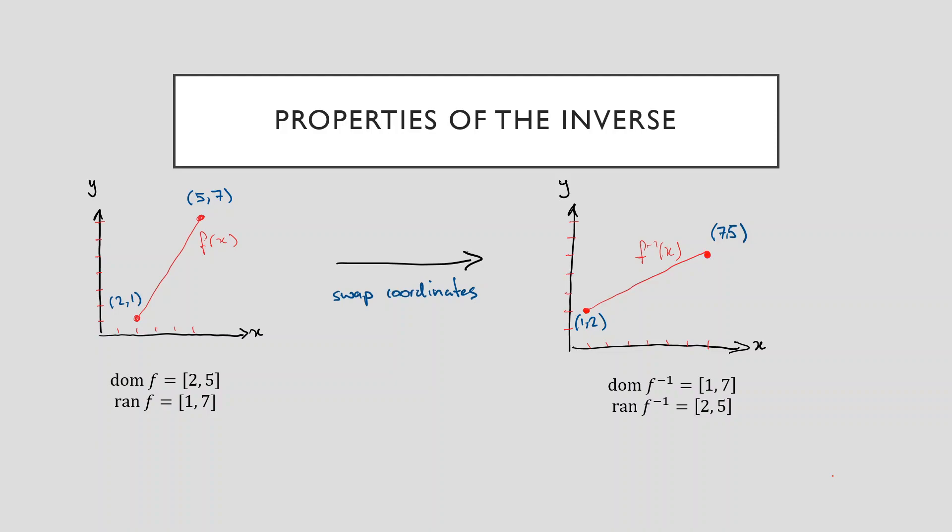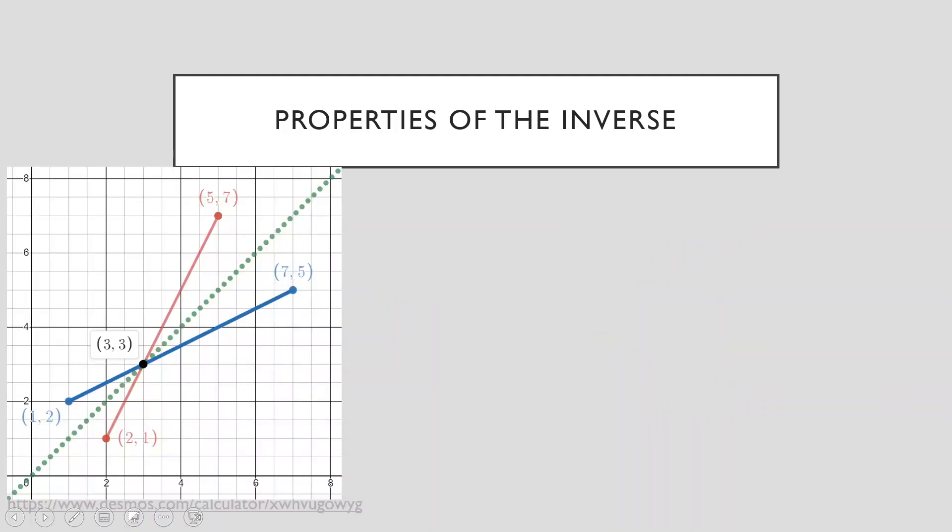So when you're presented with the inverse of some original function and it's asking for the domain and range of the inverse, so long as you know the domain and range of the original function, and so long as that original function is one to one, you can produce the domain and range of your inverse simply by just swapping them around. So that's an interesting property of our inverse.